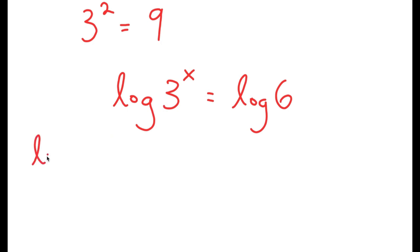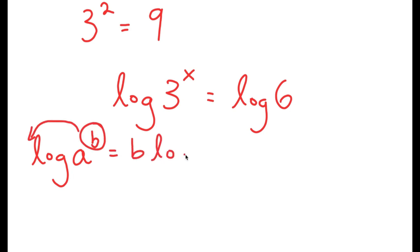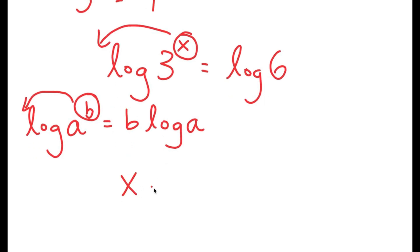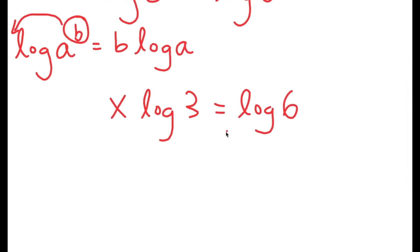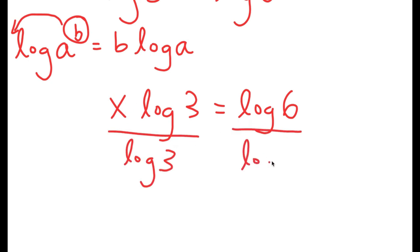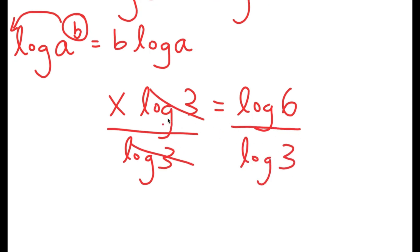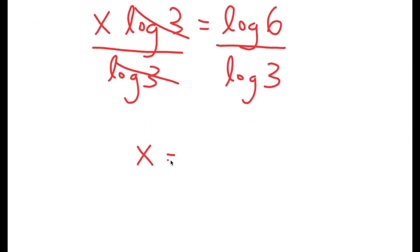From here, if I have something in the form log of a to the power of b, I can move this exponent b to the front, so this turns into b times log a. So I have log of 3 to the power of x, and I can move x to the front. I get x times log 3 is equal to log 6. Now I'm going to divide both sides by log 3 because we want to isolate x. These two cancel out and I get x is equal to log 6 over log 3.